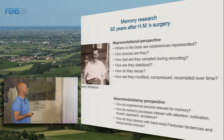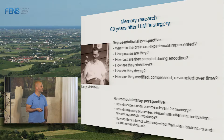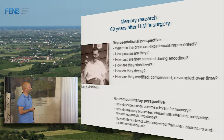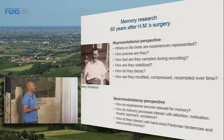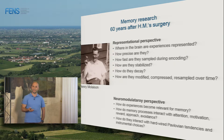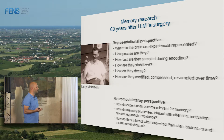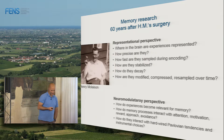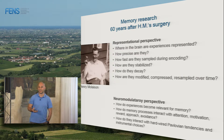For instance: where in the brain are experiences represented? How precise are they? How fast do we actually sample information during encoding as we experience them? How is information stabilized? How does information decay? How is information modified, compressed, or resampled after encoding over time? These are issues that are very relevant when you want to understand dysfunctions of memory. For our work, the most relevant topic we are currently working on is Alzheimer's disease. Without a good understanding of all this, it's very hard to make progress in Alzheimer's disease.